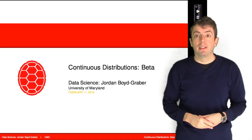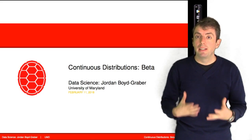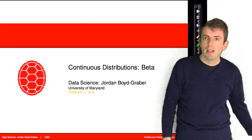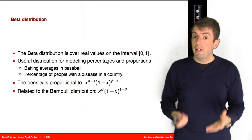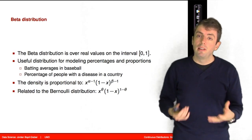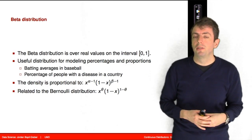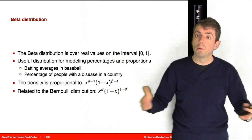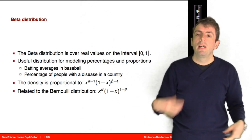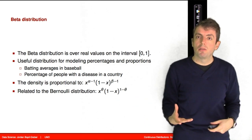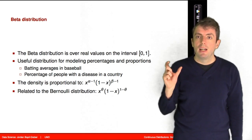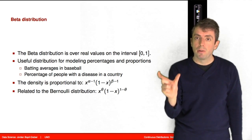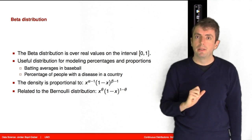We're going to continue our discussion of continuous distributions by talking about the beta distribution. The beta distribution is a little bit different from the normal distribution. The normal distribution gave you a distribution over all real values, but the beta distribution only gives you probabilities over the range zero to one, inclusive.